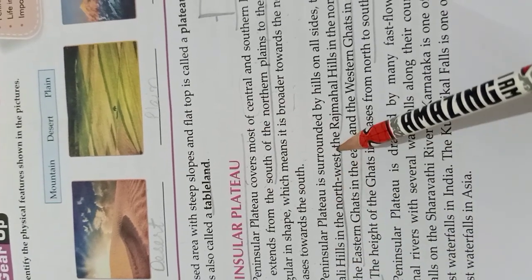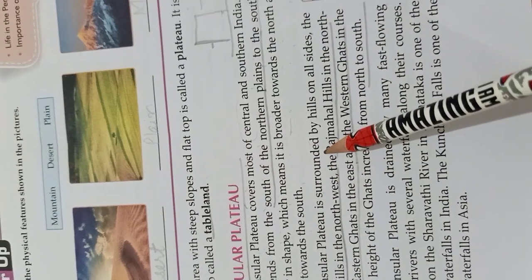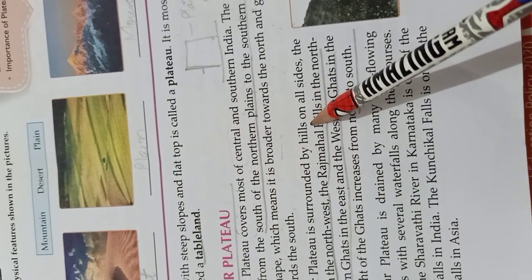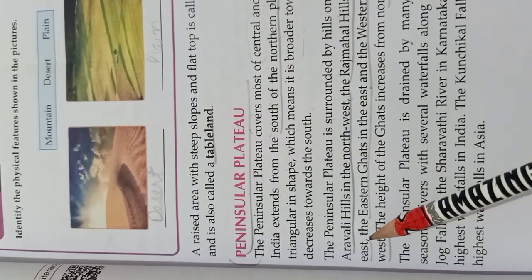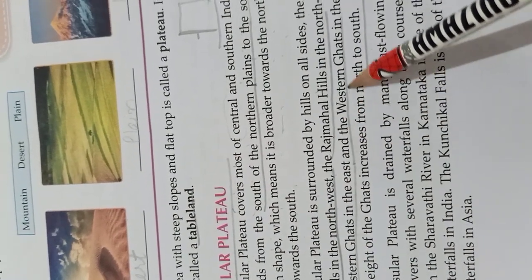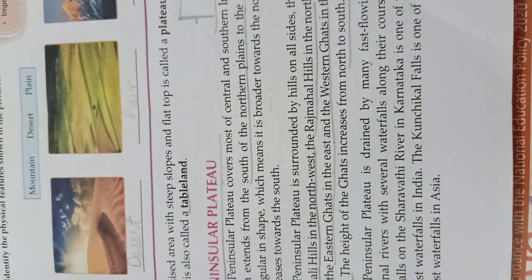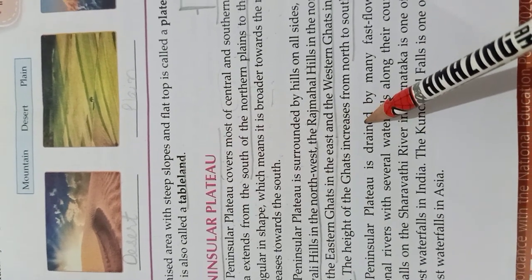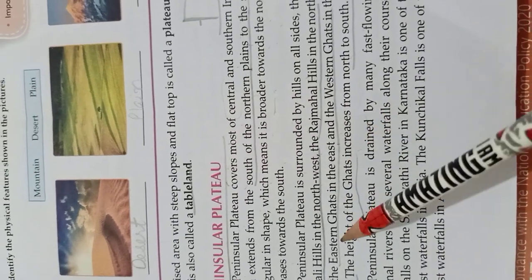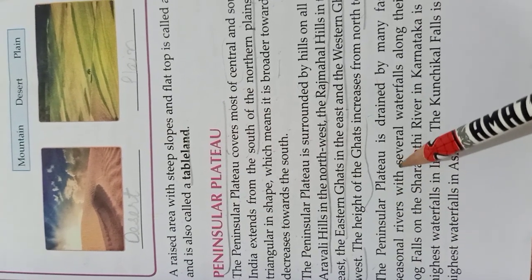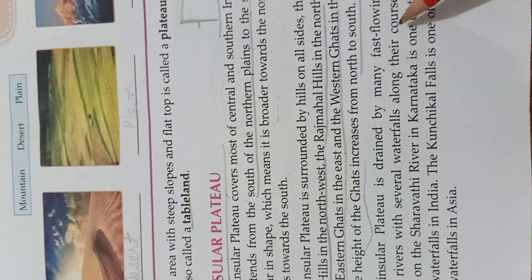The peninsular plateau is surrounded by hills on all sides. The height of the ghats increases from north to south. The peninsular plateau is drained by many fast-flowing seasonal rivers with several waterfalls along their courses.